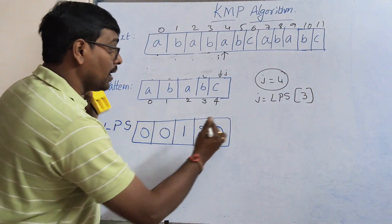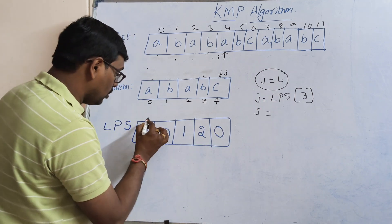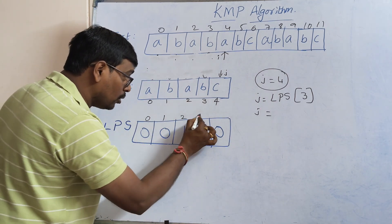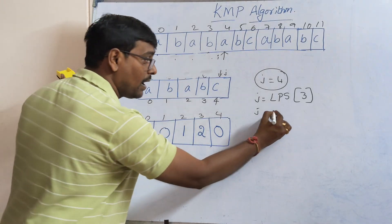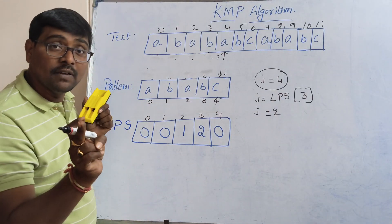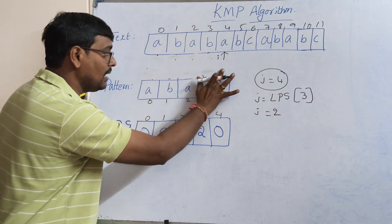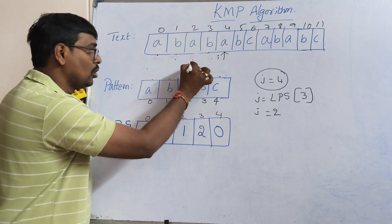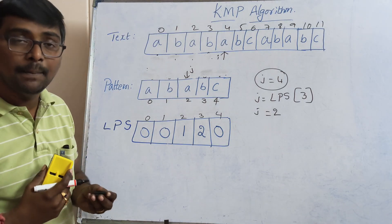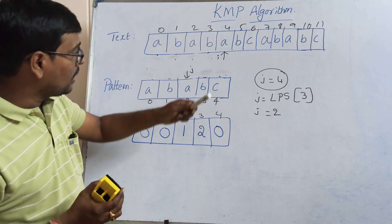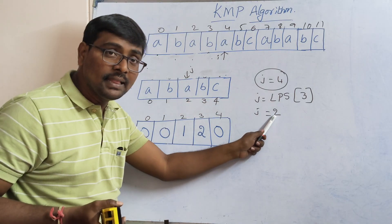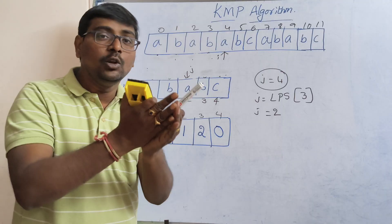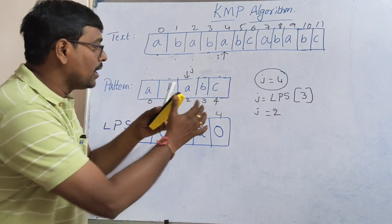Whenever mismatch occurred and if the value of 'j' is greater than zero, 'j' is updated to LPS of 4 minus 1, which is 3. Now 'j' is equal to 0, 1, 2, 3, 4. What is LPS of 3? The value is 2. Now 'j' value is 2. Immediately 'j' moves to position 2. You got it? This is the main thing.